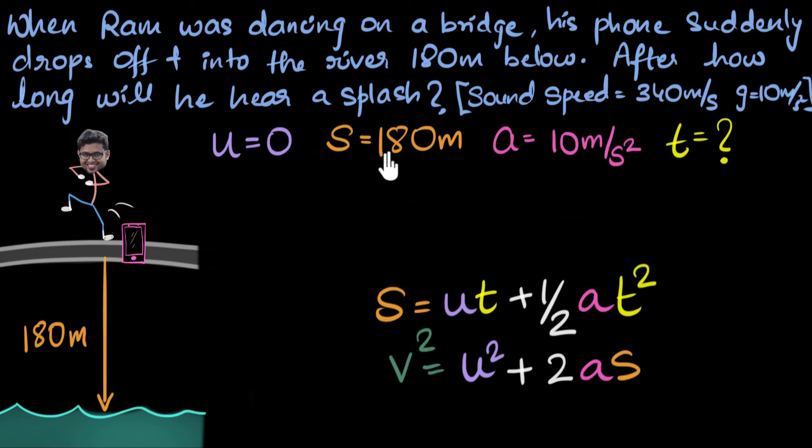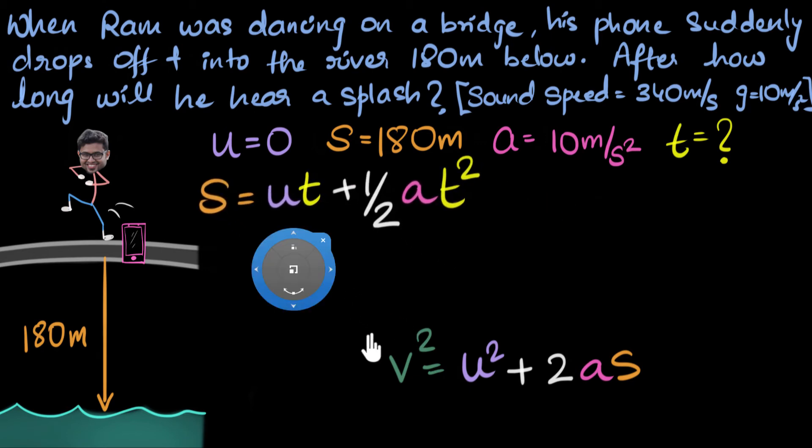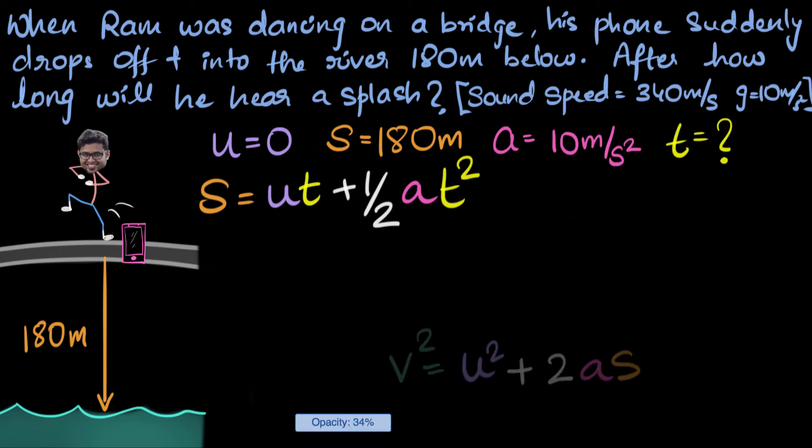Let's look at the second one. We have s, which we know. u, which we know. t is unknown. a we know. This equation only has one unknown, which means we can go ahead and use this equation. And we can get rid of the last equation as well, because it does not have t at all in it. So we have a winner. We can go ahead and use the second equation.